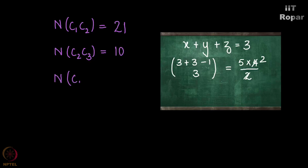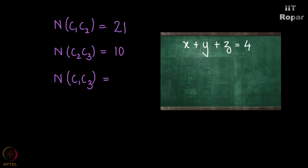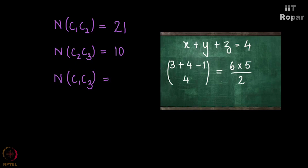n of C1∩C3 is obtained by solving x plus y plus z equals 4. Adding 7 and 9 which is 16 and removing 16 from both sides of the original equation gives us 4. The number of solutions for x plus y plus z equals 4 is 3 plus 4 minus 1 choose 4, which is 6 choose 4, and 6 into 5 by 2 equals 15. So n of C1∩C3 is 15.